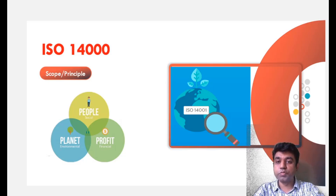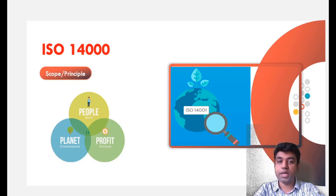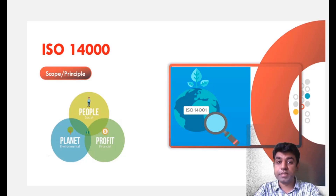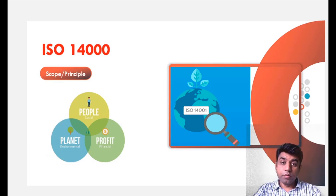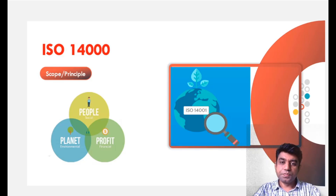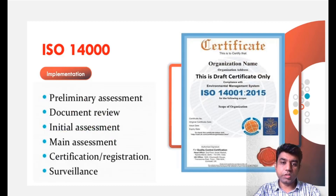If you want to get the ISO 14000 certificate, you need to have that kind of environmental approach in your organization. But ultimately it is saving the planet. The third P is for Profit, because ultimately you will grab more contracts if you are implementing this ISO 14000 certificate, so overall the profit of the company gets increased.